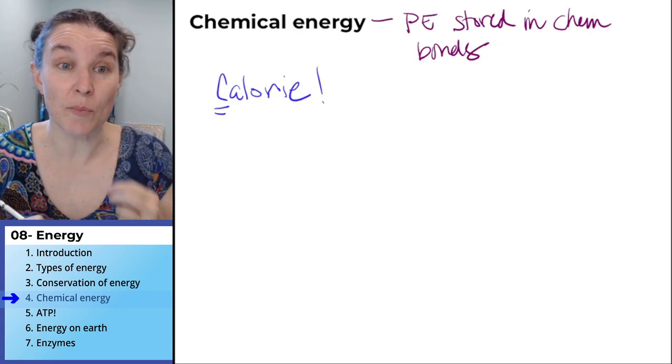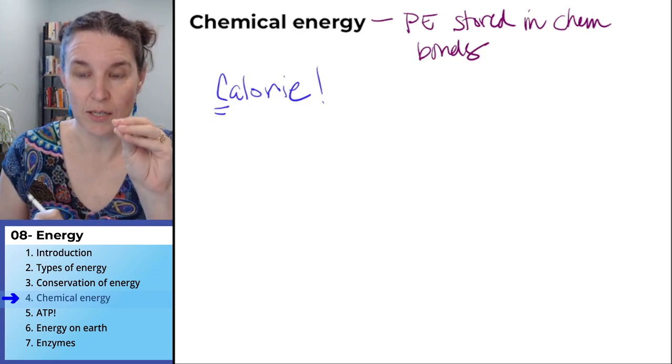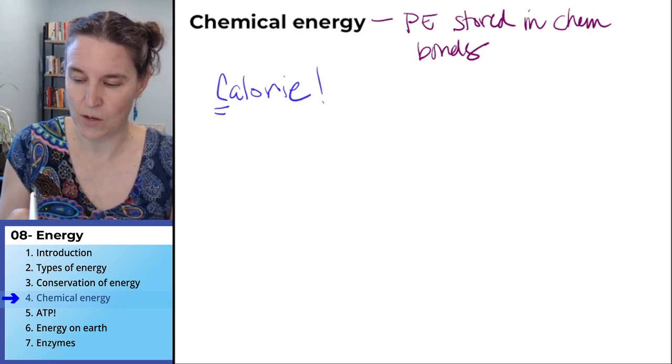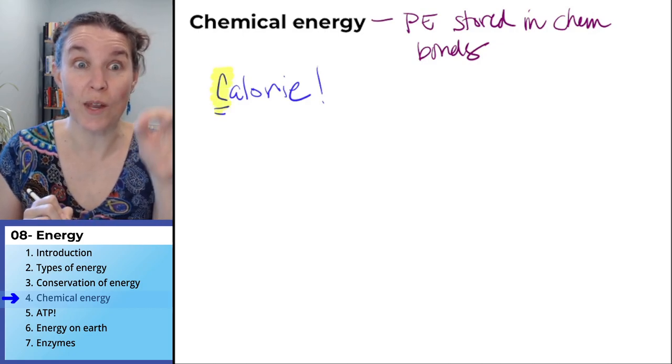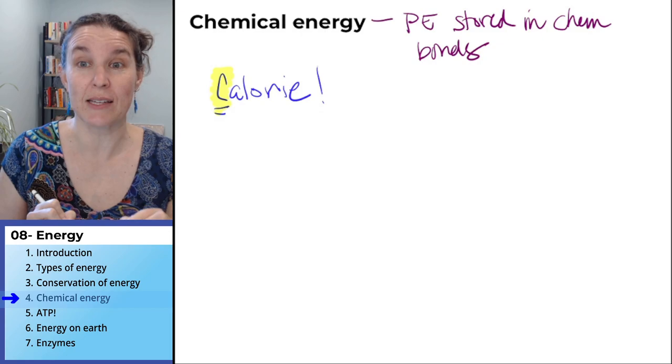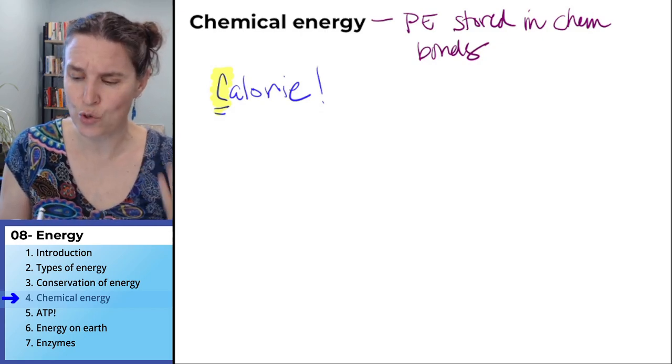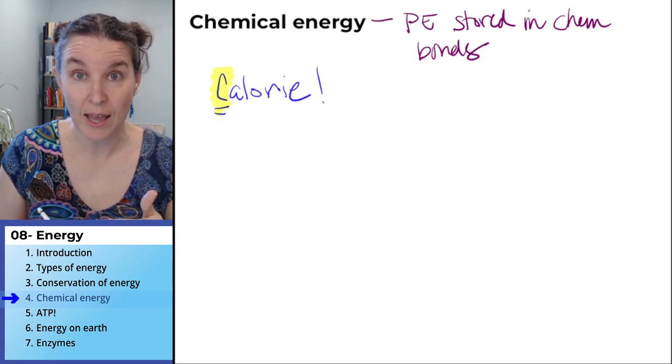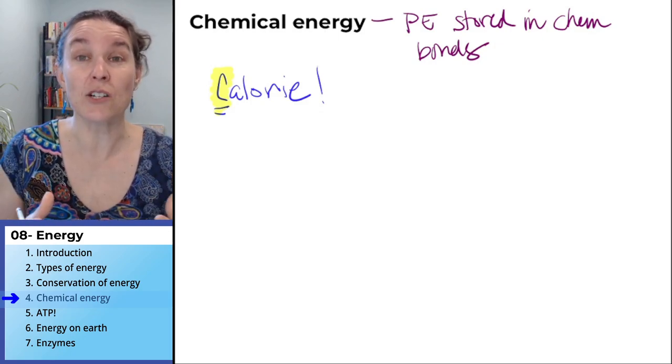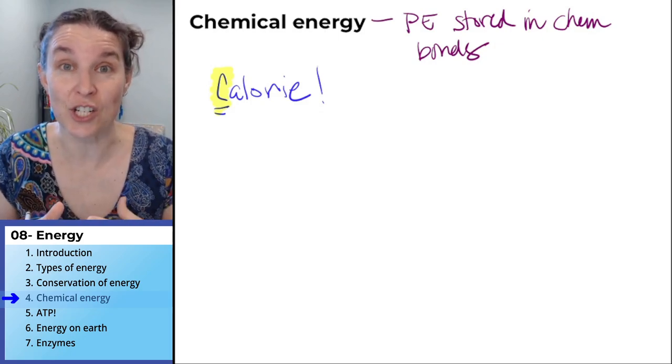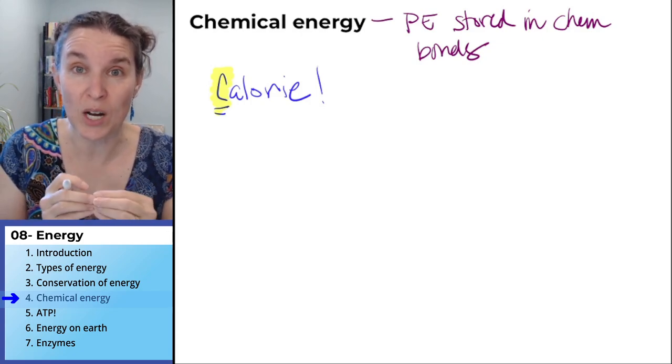A measure of the amount of chemical energy in food is the calorie. I capitalized it on purpose and marked the capital. In fact, I'm going to highlight the capital so you know I'm purposefully capitalizing this. This is a nutritional calorie, a measure of the amount of potential energy stored in chemical bonds in food.